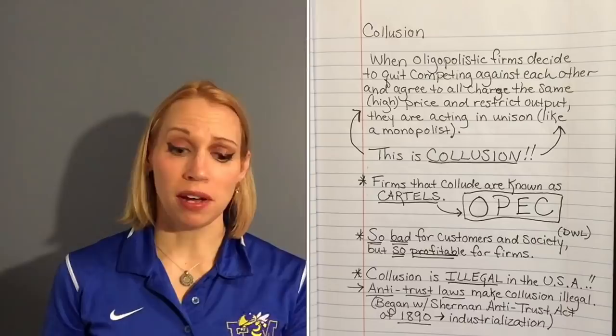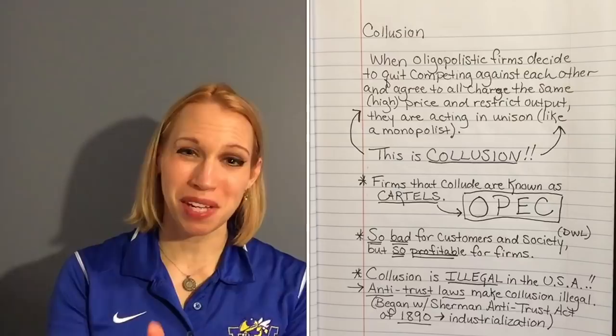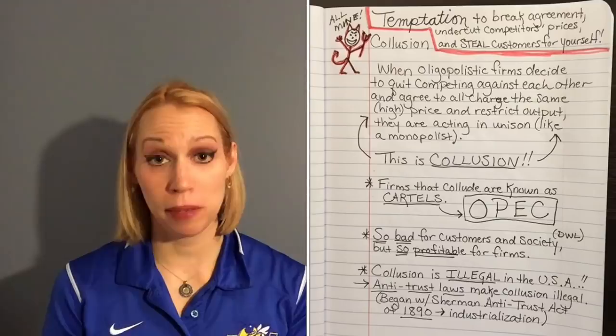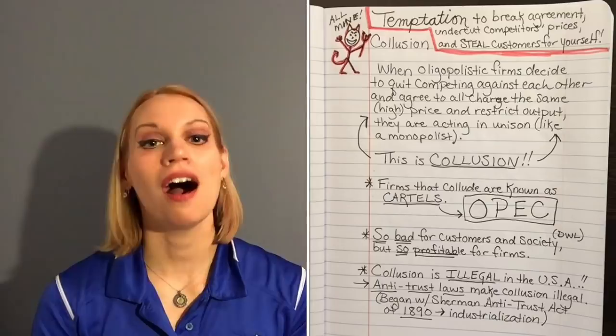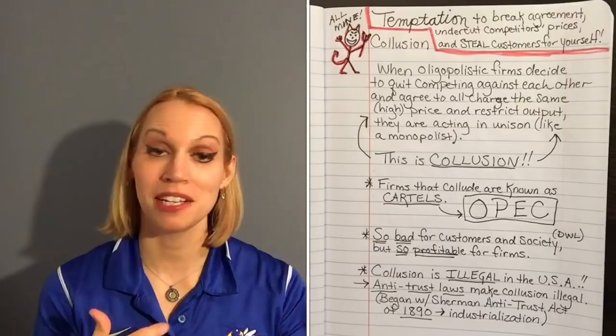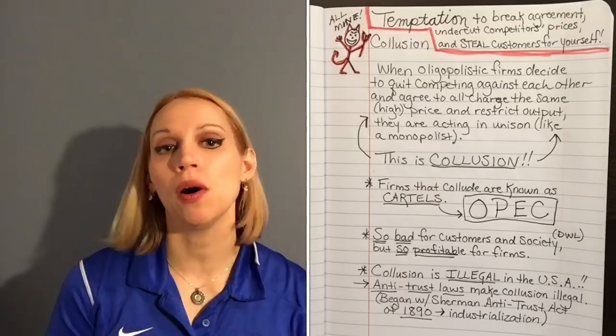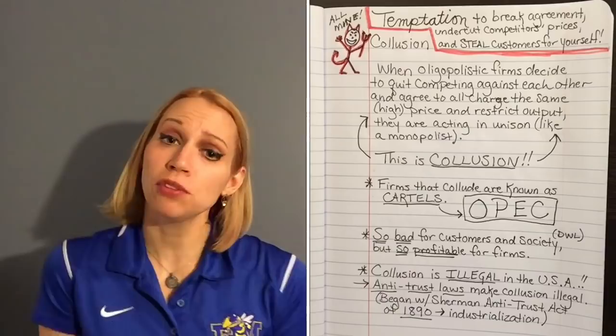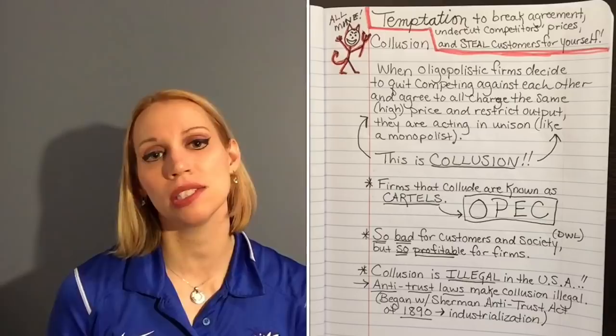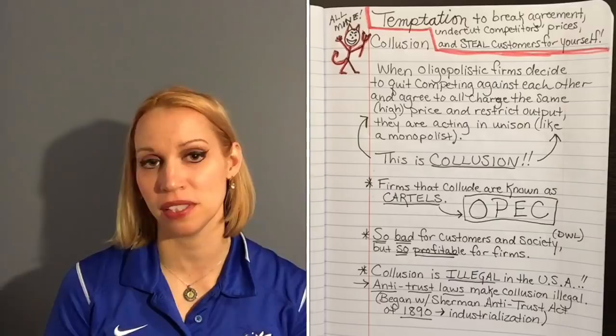So oligopolies sound great — if we all get together, collude, and make a cartel, we'll all be rich. But it's not so easy. Even though acting in unison is profitable for all businesses involved, there's always the temptation for firms to cheat on their agreement. If one firm breaks the agreement and lowers their price, all the customers come to them and none go to competitors paying $400 a month. Cartels are very unstable because they only last as long as firms can trust each other to stick with the agreement.